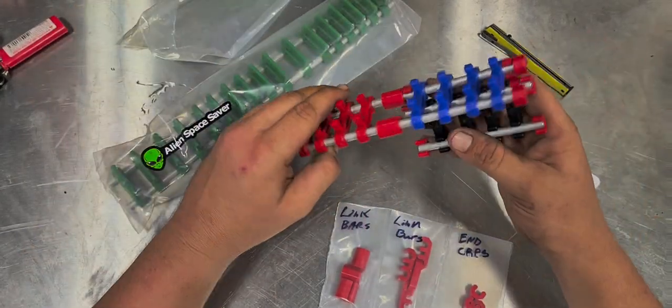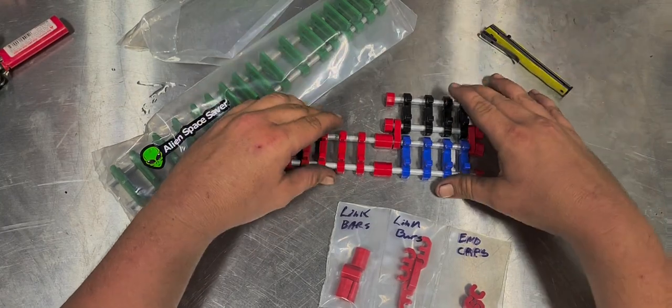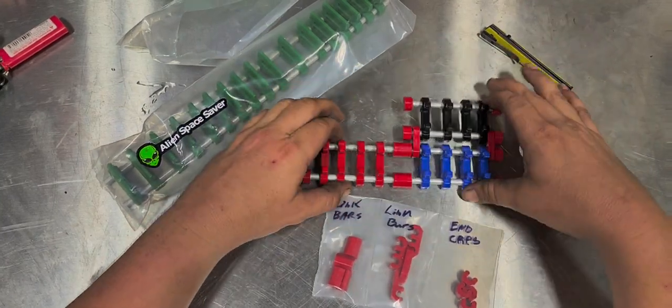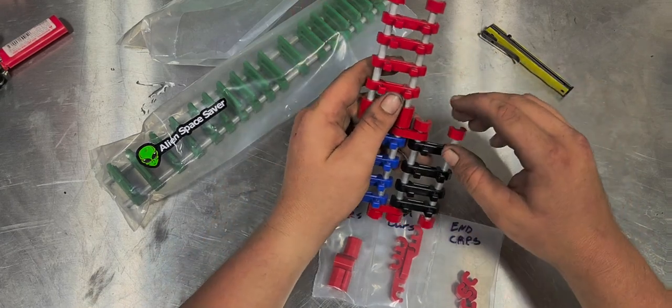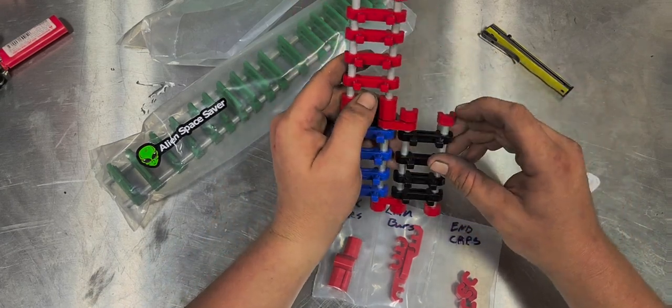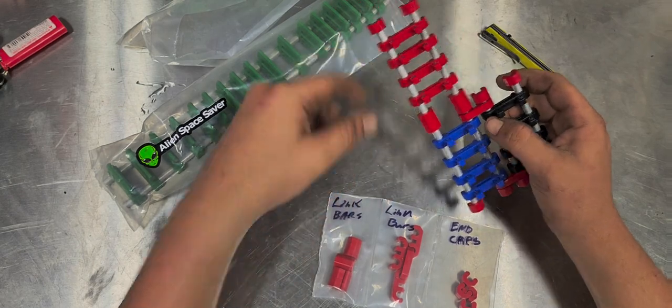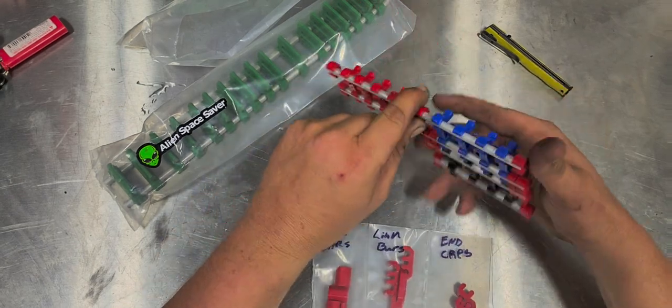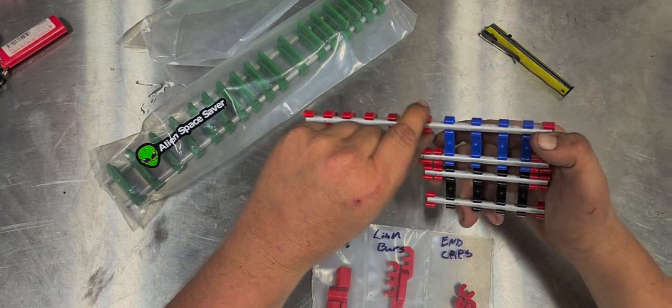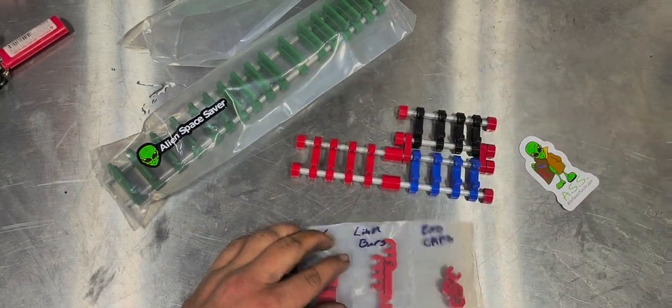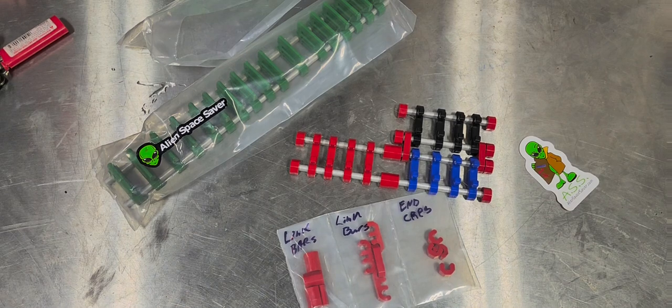So this is the example they sent, quarter inch socket rails. As you can see it has the end caps on it, it's got the link bars, and it has the link bars for the rails right here, the long ones.